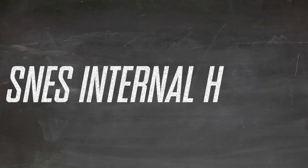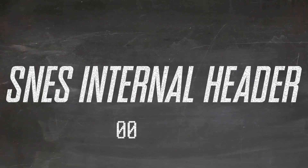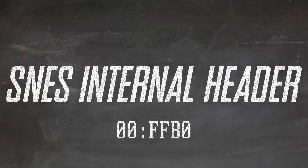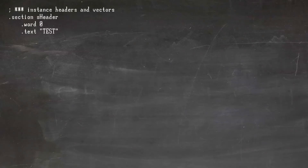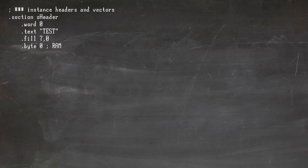I mentioned the SNES internal header — what is it? It starts at $00FFB0 in SNES address space and has two parts: the ROM registration data and the specifics. The first two bytes are the maker code — you can put whatever you want. Then four bytes of game code — again this is a tag, it doesn't matter. Then seven bytes of zero for some reason. Then the expansion RAM size — this is for expansion chips, so normally zero. Special version: zero. Cartridge type: zero.